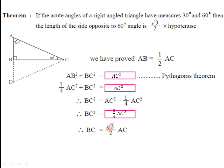Now if we consider the diagram, BC is the side opposite to 60 degree and AC is the hypotenuse. So we have proved that the side opposite to 60 degree is root 3 divided by 2 times the hypotenuse. In short, for a triangle with angles 30 degree, 60 degree, and 90 degree: the side opposite to 30 degree is half of the hypotenuse, and the side opposite to 60 degree is root 3 divided by 2 times the hypotenuse.